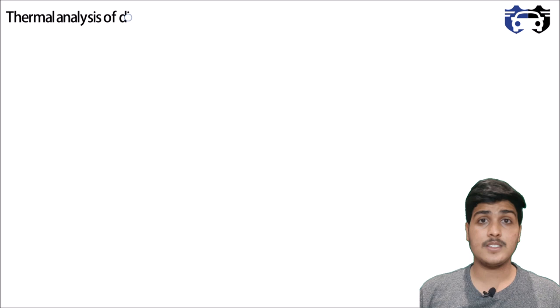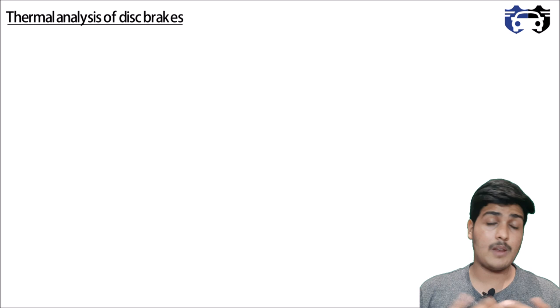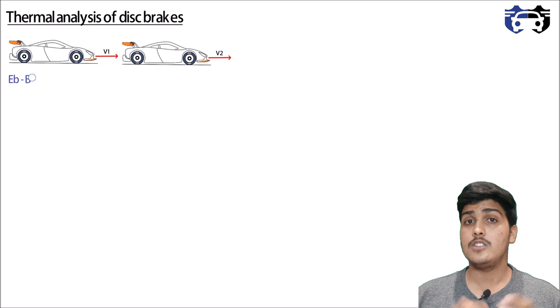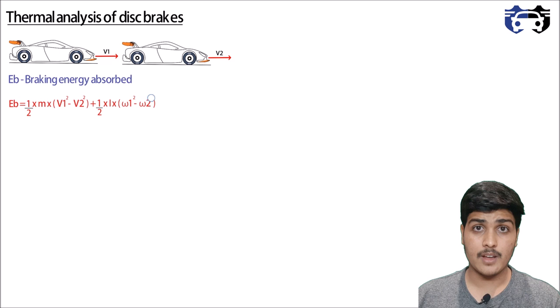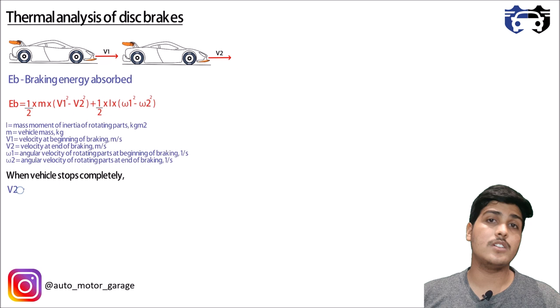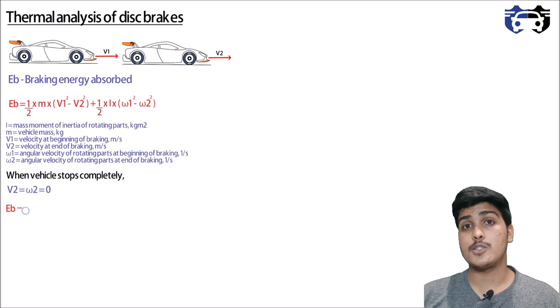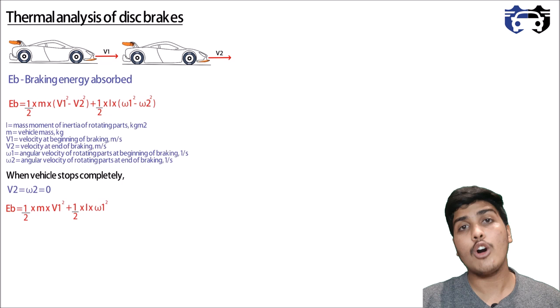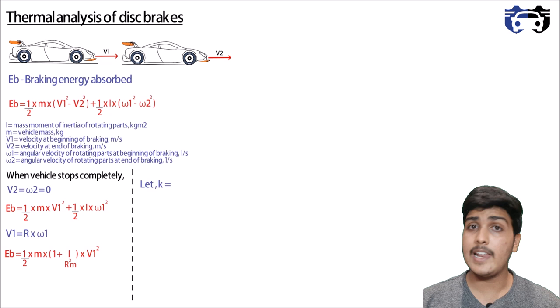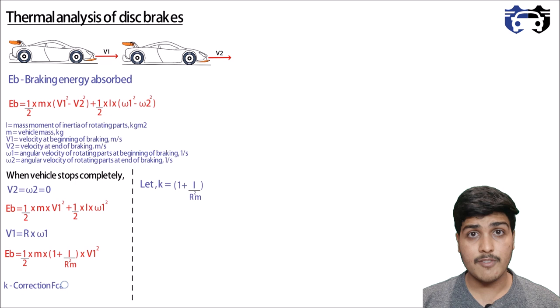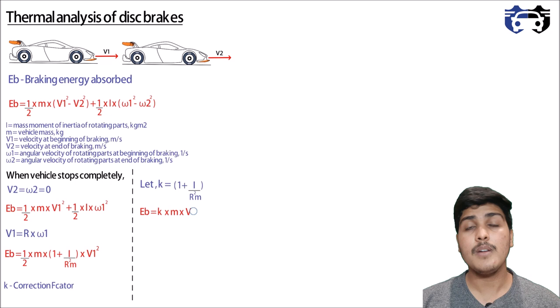Now let's do the thermal analysis of this brake, starting with finding the change in temperature while braking. When decelerating from velocity v1 to v2, the braking energy eb equals (1/2)·m·(v1² minus v2²) plus (1/2)·I·(omega1² minus omega2²). When the vehicle stops completely, v2 and omega2 equal zero. Expressing all rotating parts relative to wheel rotation with v1 equals r·omega1, the braking energy becomes eb equals k·m·v1²/2, where k equals 1 plus I/(r²·m) is the correction factor.